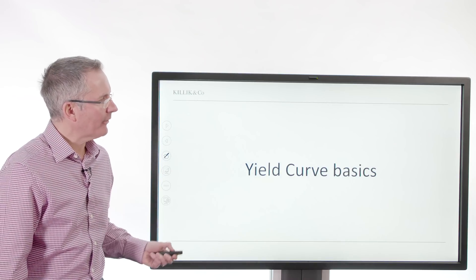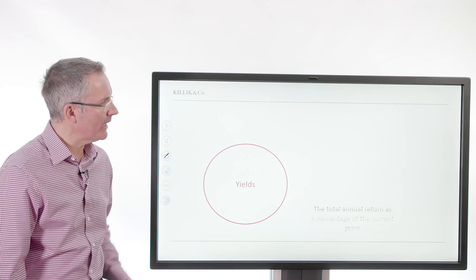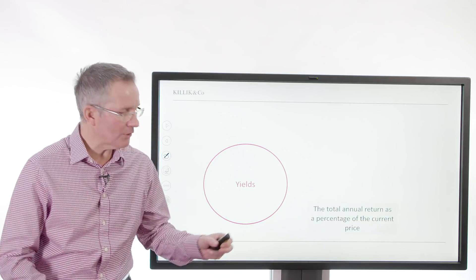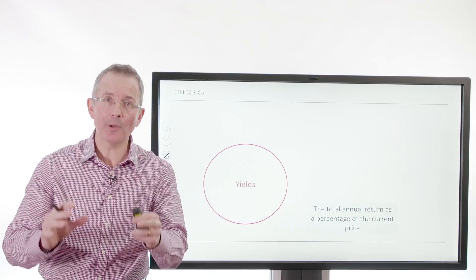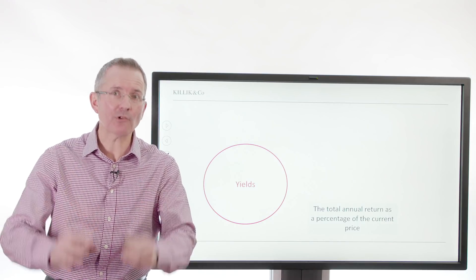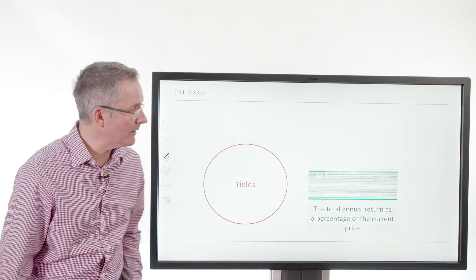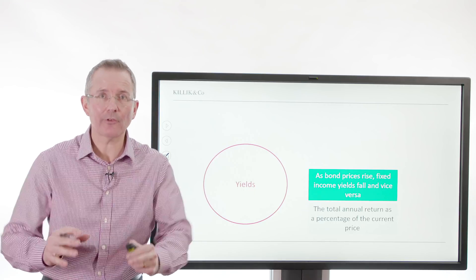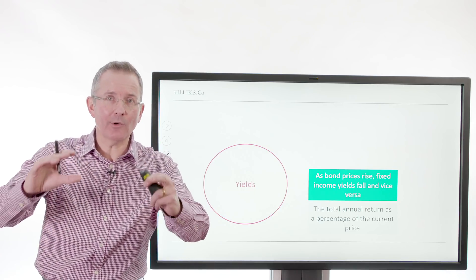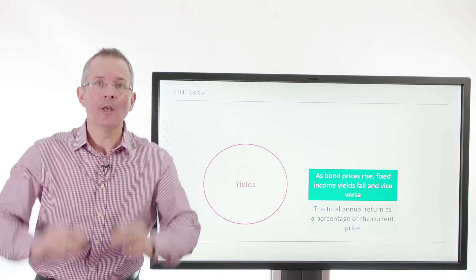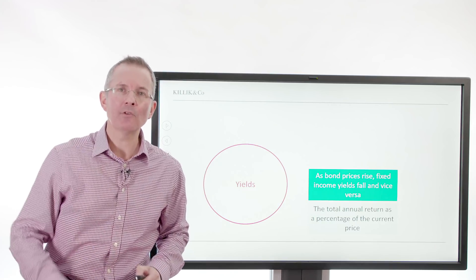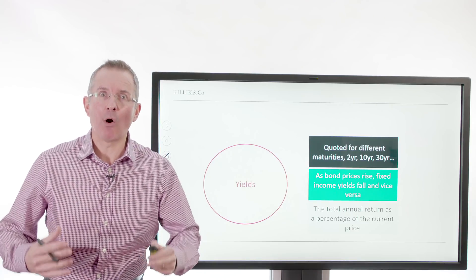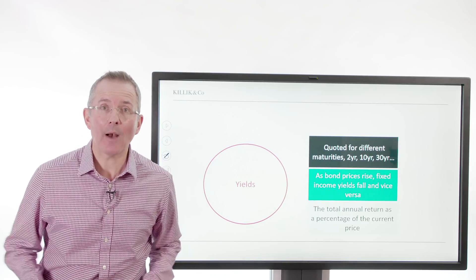Yield curve basics — just to summarise some of that. So yields are what? The total annual return as a percentage of the current price of an IOU. I deal with this in more detail in the bond section of Killick Explains — I'll give you a reference at the end. As bond prices rise, fixed income yields fall, and vice versa.